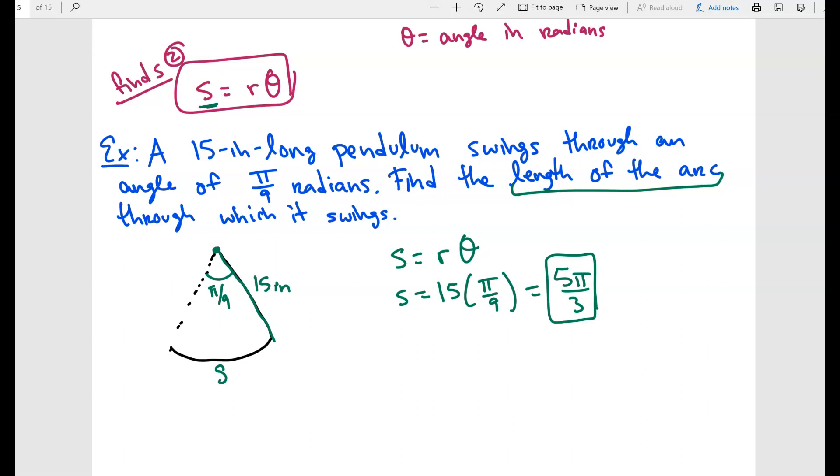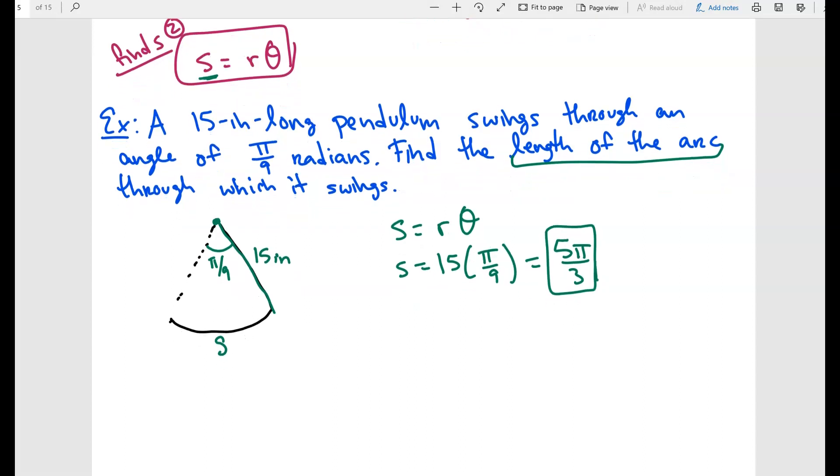Now you have to be very careful because this problem or this answer right here is what we call the exact answer. So if I ask you for the exact answer, this is what I want. I want it in terms of π, not a decimal. If I were to put it in my calculator and write it as a decimal, it would be 5.236. This is what we call the approximation. So there's a difference. Make sure that when you look at the problem, if I want the exact length or do I want the approximation.